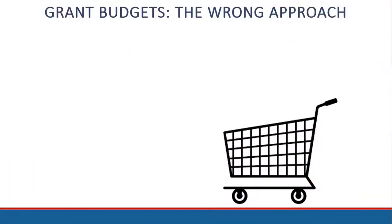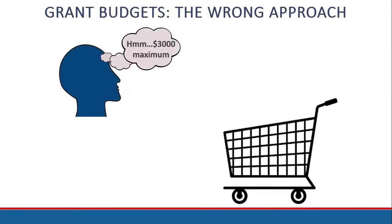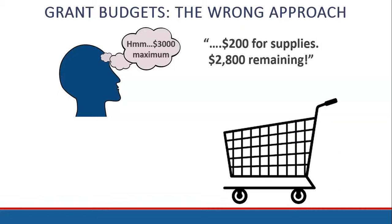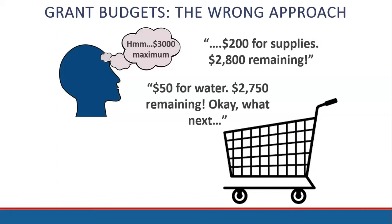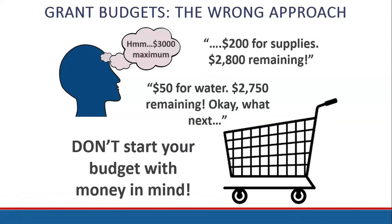There is a right and a wrong way to approach your grant budget. Oftentimes we see alumni approaching their budget like this: 'I have $3,000 maximum — that's $200 for supplies, $2,800 remaining, $50 for water, $2,750 remaining, okay, what next?' Do not approach your grant budget like a trip to the supermarket, simply tossing items into the basket until you run out of money. Don't start your budget with money in mind.